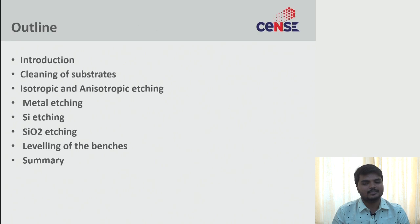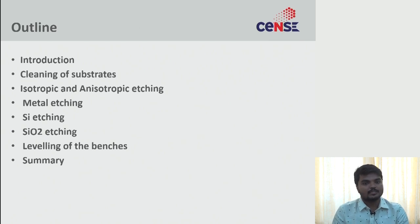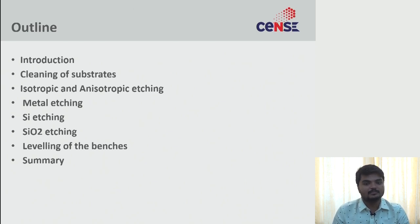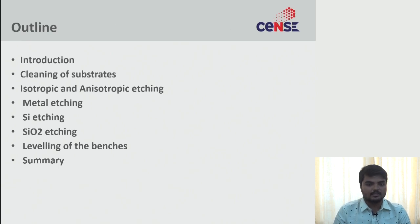We'll cover isotropic and anisotropic etching of a silicon substrate, how they differ, and metal etching — since we deposit different types of metals, we need different chemical recipes and compositions to etch them. We'll discuss how to control etch rates for each metal type.